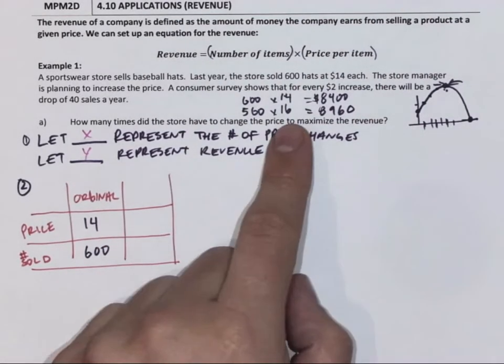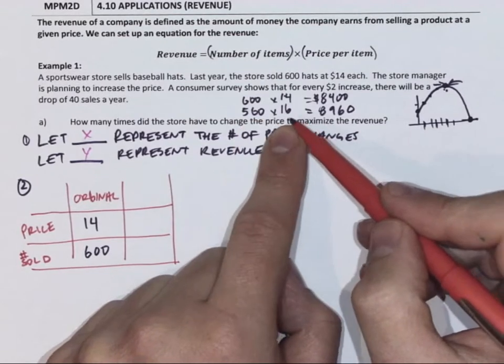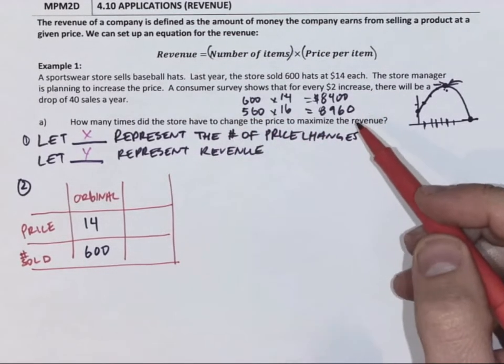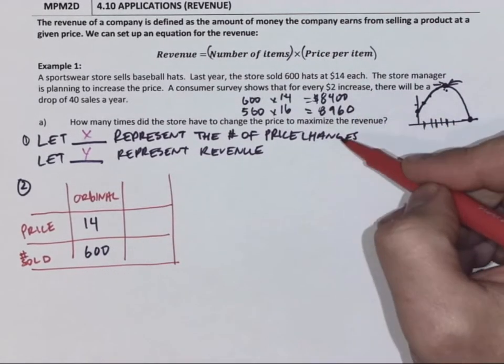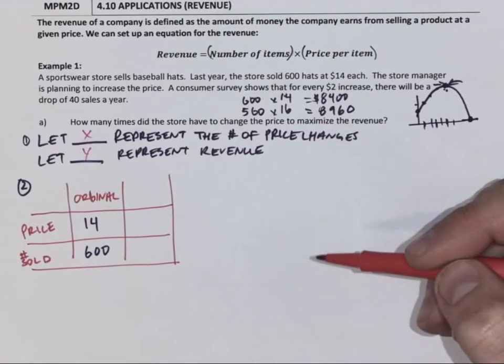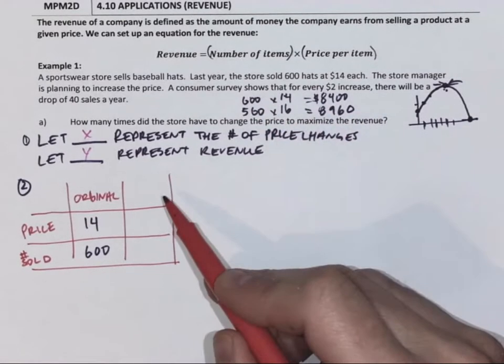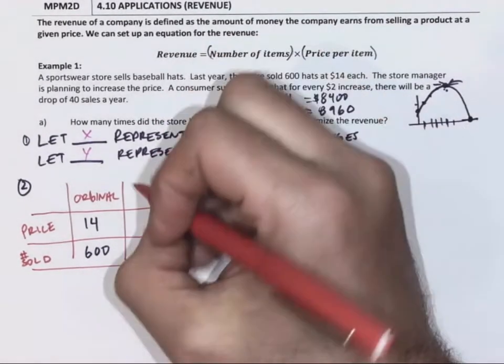Instead of going through plus two dollars take away forty, plus two dollars take away forty, plus two dollars take away forty, and looking at it that way, we can set up an equation. If it's only one change or two changes, we might be able to see that. If it was forty, fifty, a thousand, because we're dealing with a high price item, we don't want to go through every combination. We want to use our math to do it quickly.